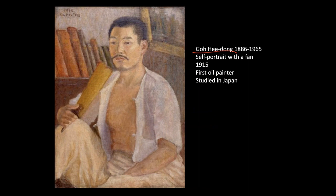Ko Hee-dong was born into a pretty good family — his family were translators and they were wealthy. He started learning traditional painting and Confucian literature, but he decided to go to Japan. He was the first Korean painter who studied in Japan and came back. While studying there, he learned how to use oil, so he is considered the first oil painter in Korean history.